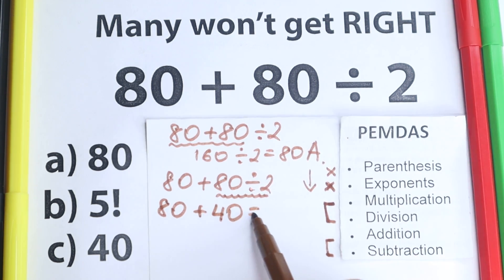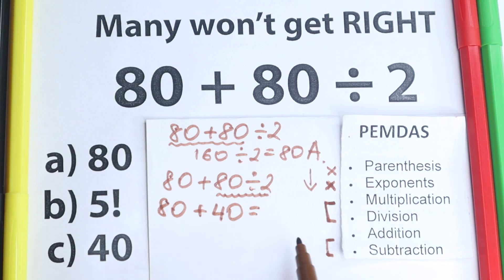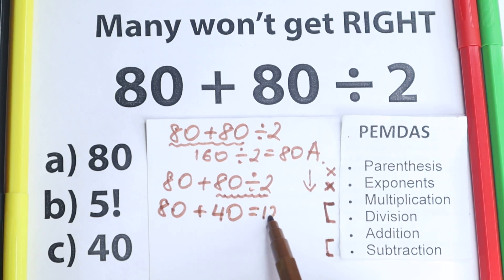So we have 80 plus we have 80 divided by 2 equal to equal to 40. Yeah, so we have 40 and if we add it, as you can see addition is the last step, so this is equal to 120.